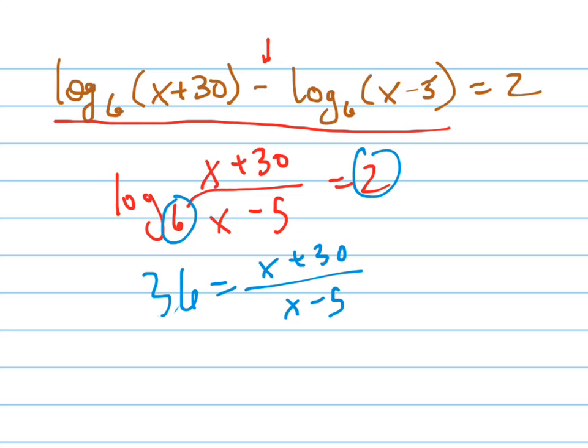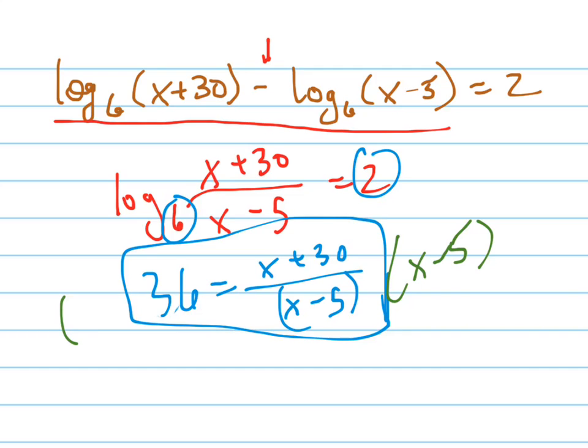Alright, so now this is where a lot of people—this is basic algebra—they don't know how to solve this equation right here. The way to solve it is to get rid of the (x minus 5), clear the fraction. So I'm going to multiply by (x minus 5) and (x minus 5).